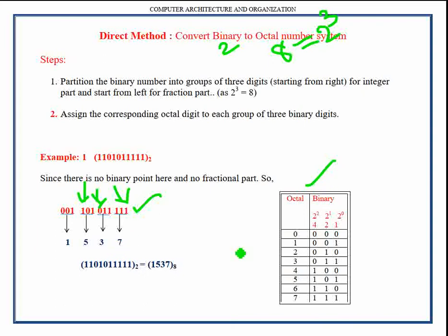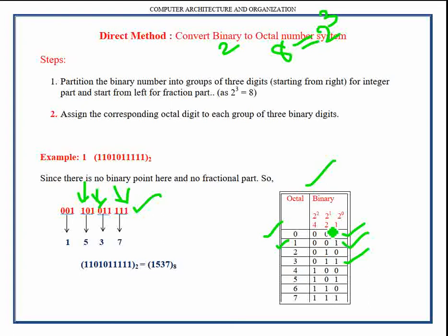In this table, the octal equivalent value for each group of three digits is given. The octal equivalent value is assigned based on the weight of the digit present in the group. For example, if none of the digits are present the octal value is zero. If only the digit in position zero is present, its weight is one, so its octal equivalent is also one. If digits in positions zero and one are present, the octal value is two plus one, which equals three.